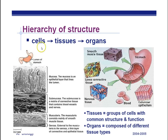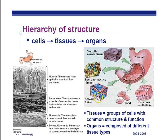The cell is the smallest unit of life and the lowest level of organization considered alive. Cells make up tissues. Tissues are a group of cells with common structure and function. For example, we have muscle tissue, connective tissue, and nervous tissue — all cells working together to do the same function. In the case of muscle tissue, it's to contract muscles so you can move.